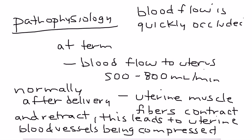In a situation of uterine atony, there is a failure of contraction and retraction. The uterine muscle fibers are unable to contract and retract, so you don't get the blood vessels being compressed or occluded, and that contributes to bleeding.